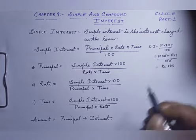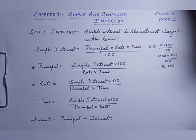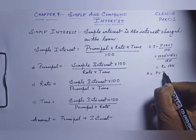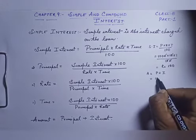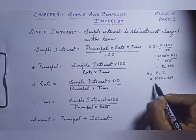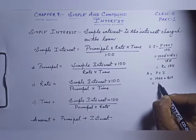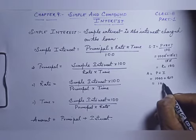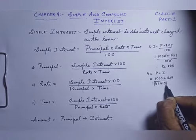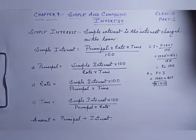The interest is rupees 100. Now how to calculate the amount — the amount that we have to give to the bank after one year. Amount is equal to Principal plus Interest. The principal is rupees 1000 and the interest is rupees 100, so the amount to return to the bank is rupees 1100.